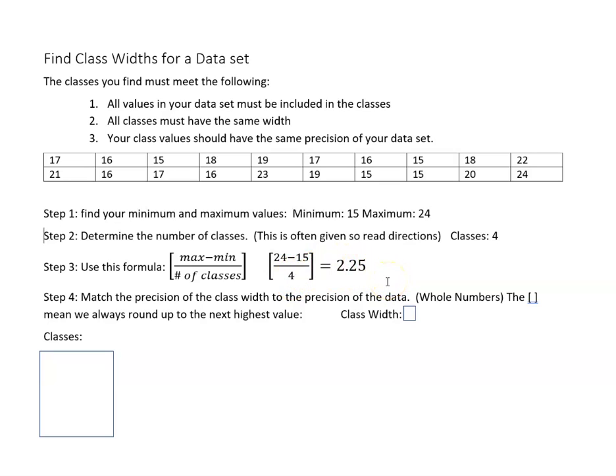Now remember that your classes and your class width should have the same precision as your data set. So we have something with decimals here, but we want to have something to whole numbers to match our precision. And remember too that the brackets mean that we're going to always round up to the next highest value. So even though in regular rounding rules we would say 2.25 rounds down to 2, we would in this case say it's going to go up to 3 because the brackets mean specifically here go up to the next highest value of that precision, which means our class width would be 3.